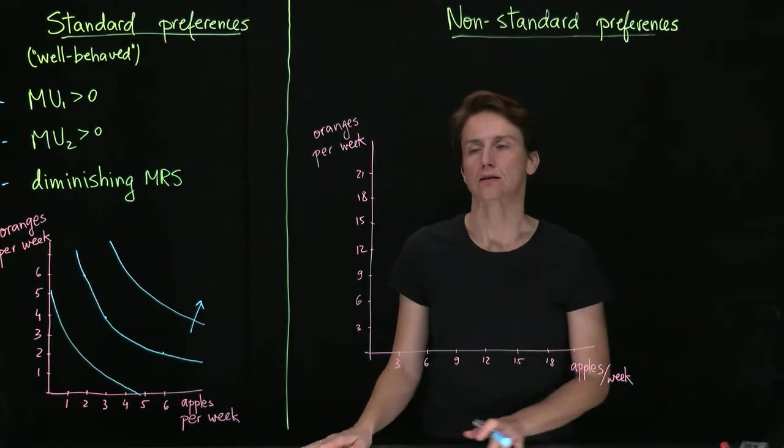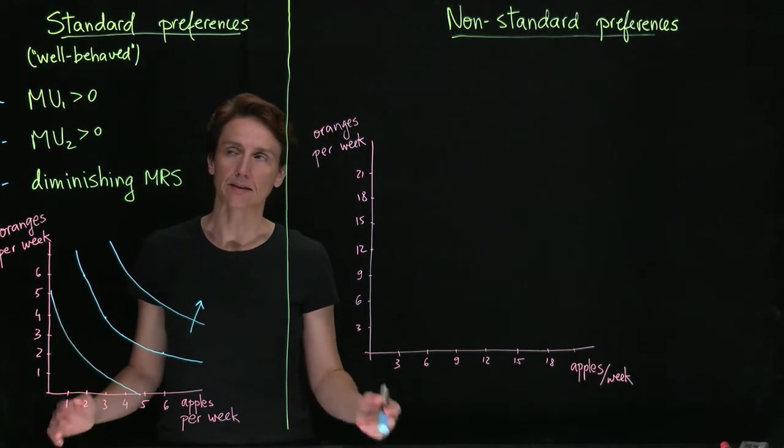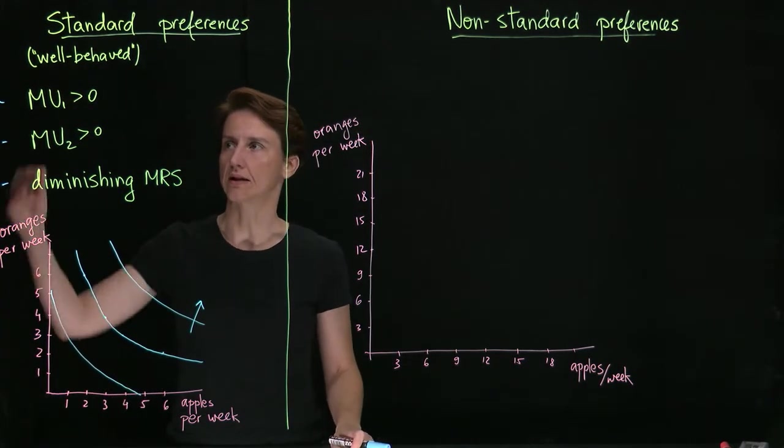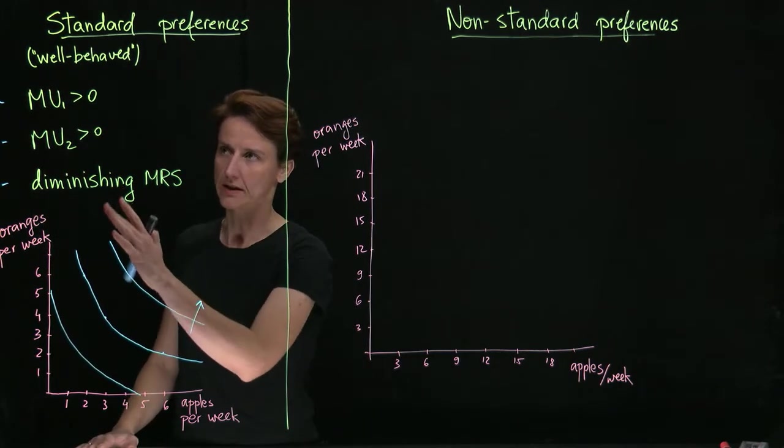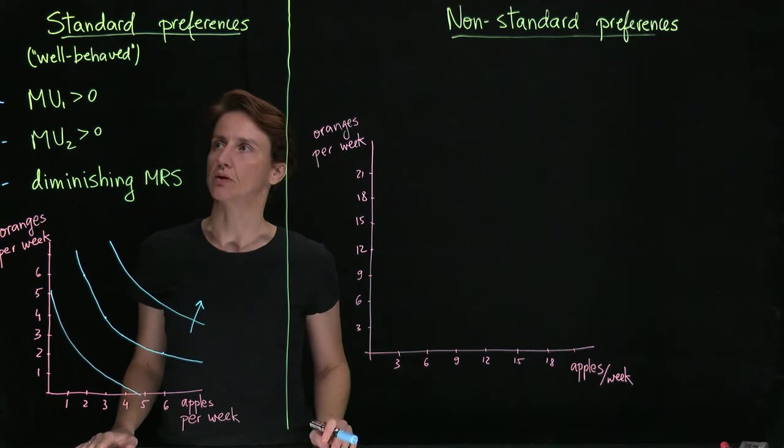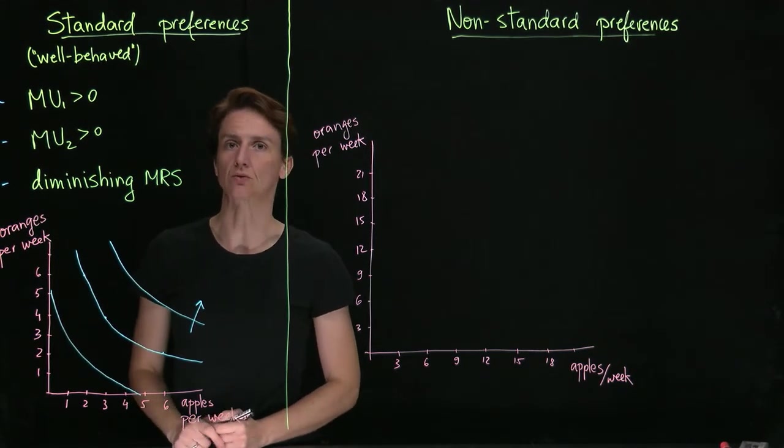Let's continue talking about preferences. So far we've talked about what we'll call standard or well-behaved preferences, and that is to say marginal utilities are both positive, which is why indifference curves, as we've already pointed out, remain downward sloping.